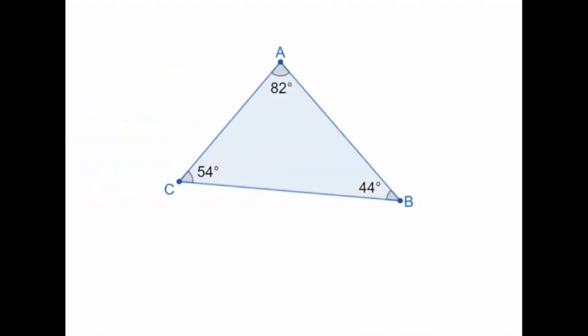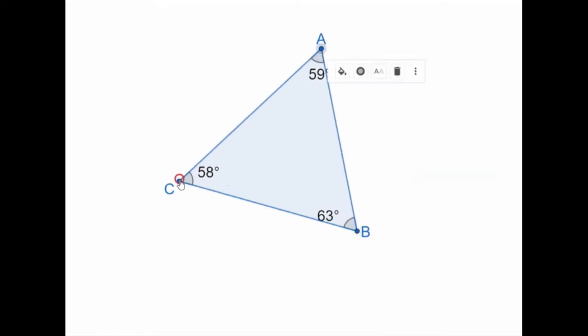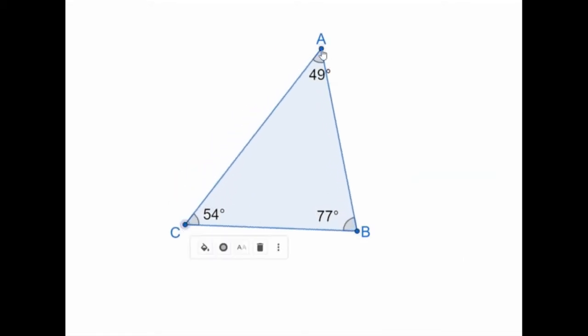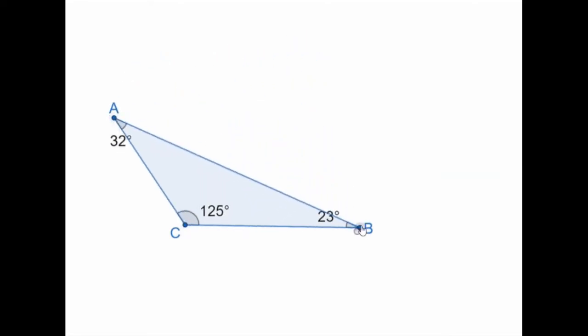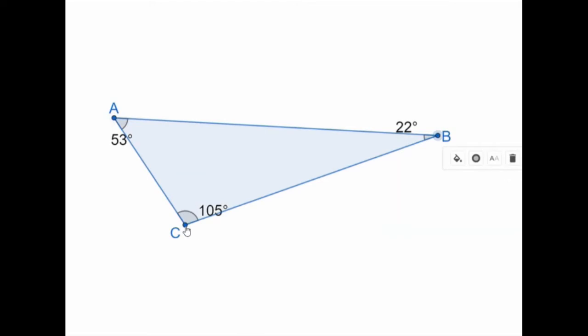So that fact is true of all triangles. The angles always add up to 180 degrees. Just as can be seen here in this triangle that I can move around, change the size of the angles, but wherever I move these points to, the three angles will always add up to 180 degrees.